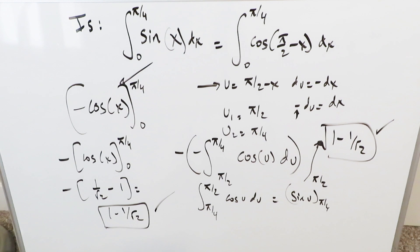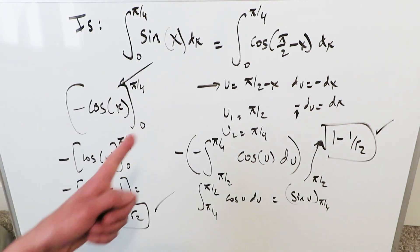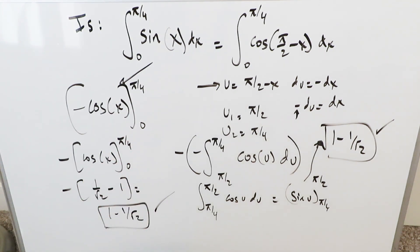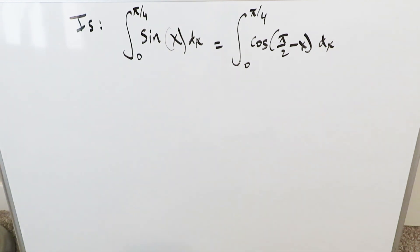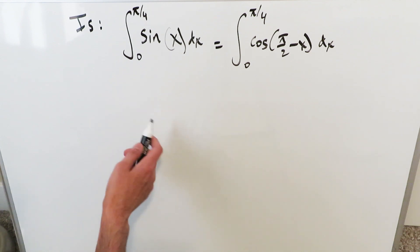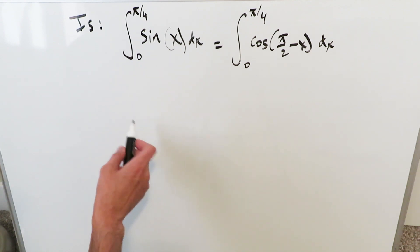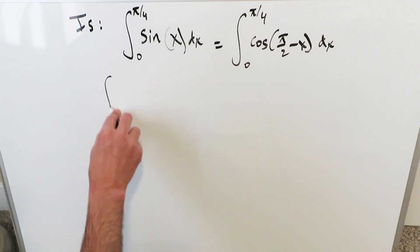The end result is still the same: 1 − 1/√2. This shows that co-function identities can be brought into integrals, and they can sometimes make your entire procedure easier.